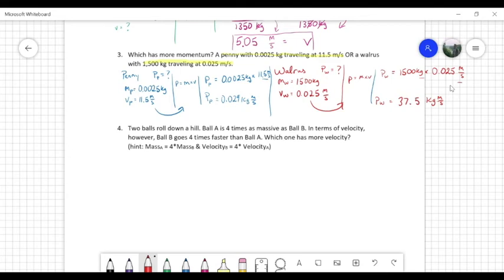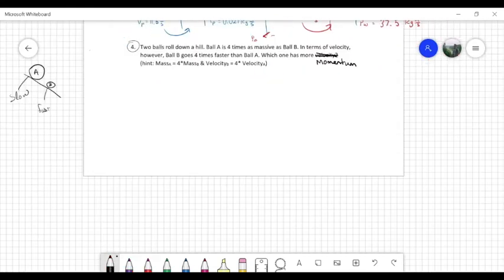So if we compare these two numbers, the P W is greater than the PP. So the walrus has more momentum. Nice. All right.